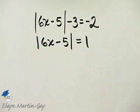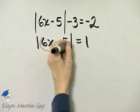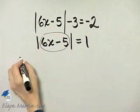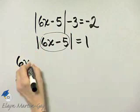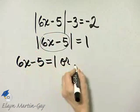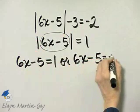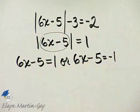Now, for the absolute value of 6x minus 5 to equal 1, that means what is inside here, and that is the expression 6x minus 5, must equal 1, or 6x minus 5 must equal negative 1. And all we need to do is solve these two linear equations.